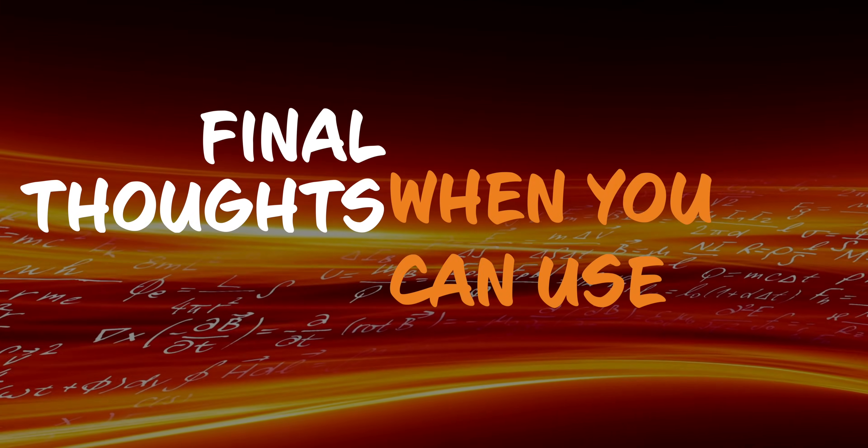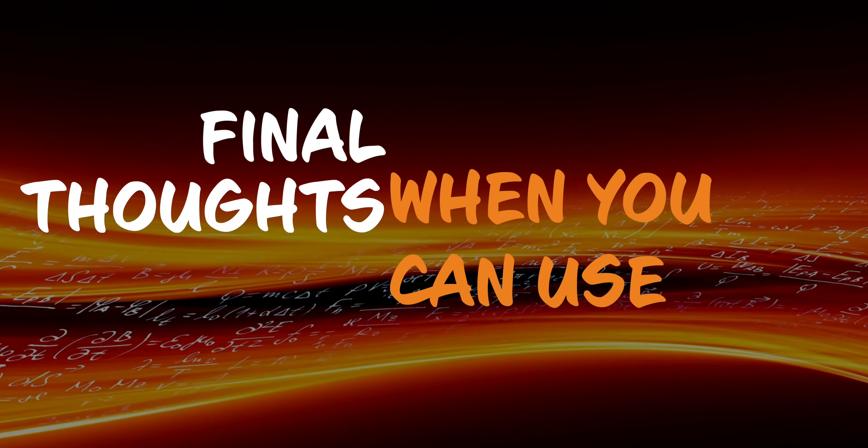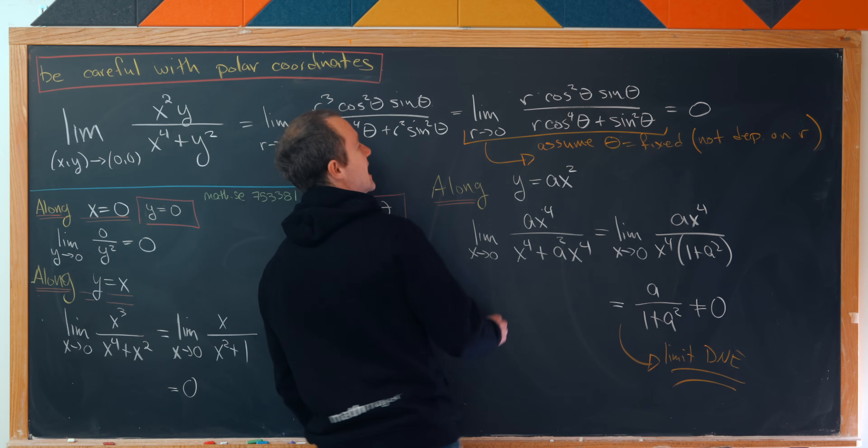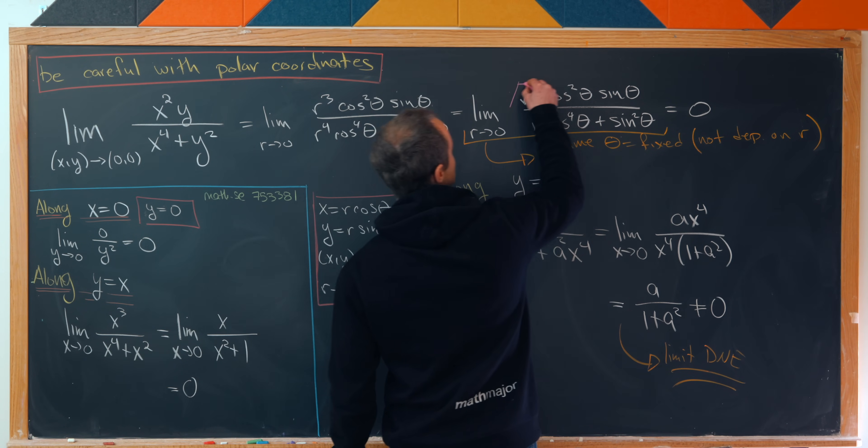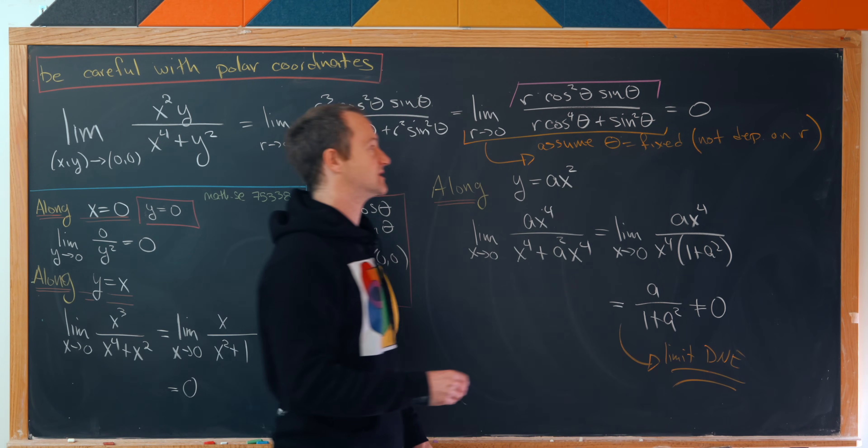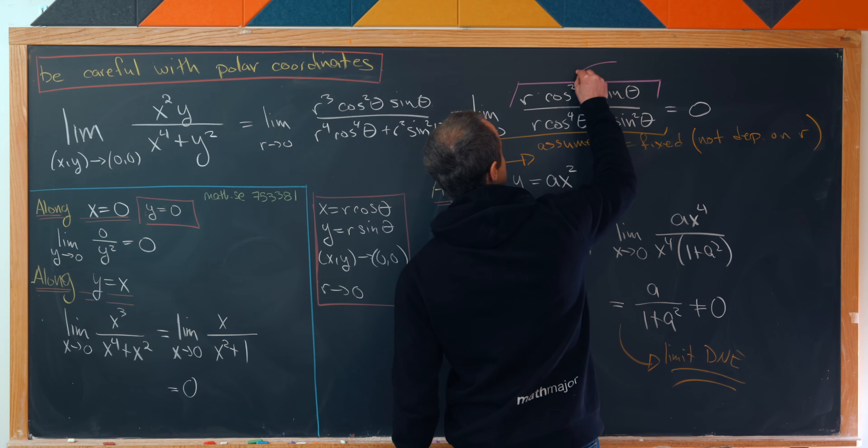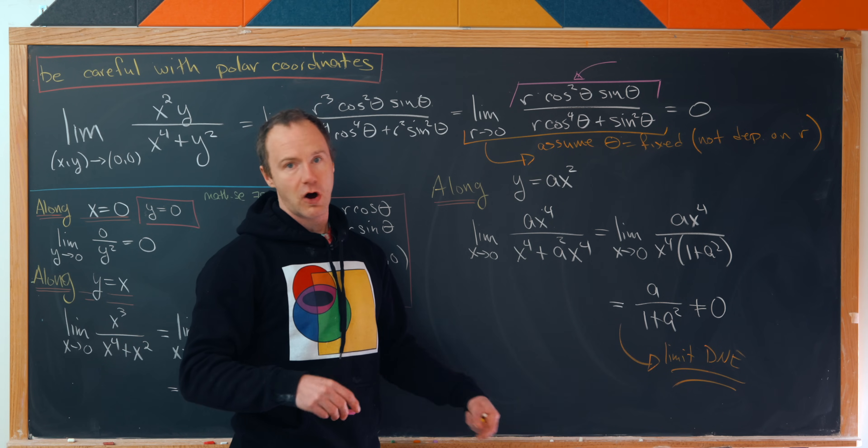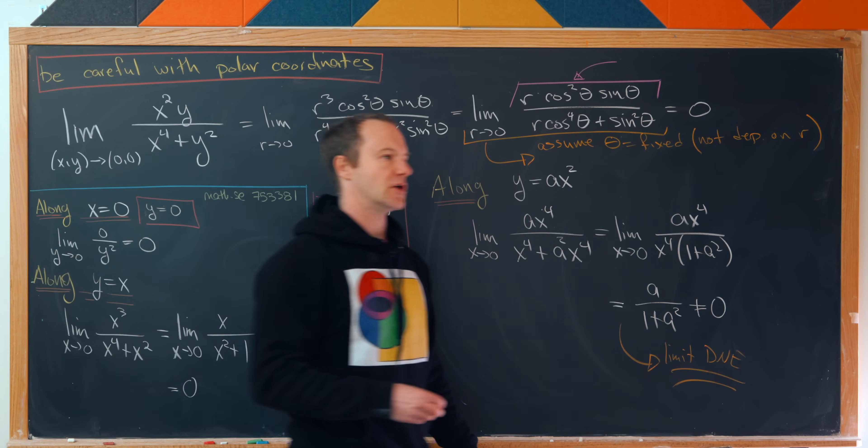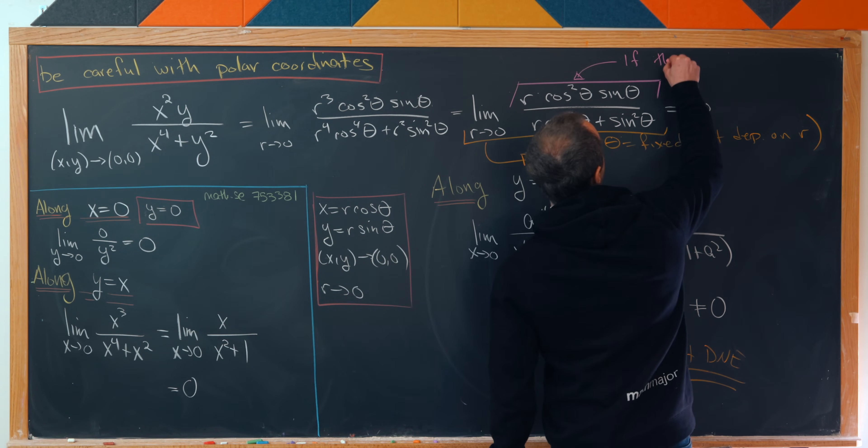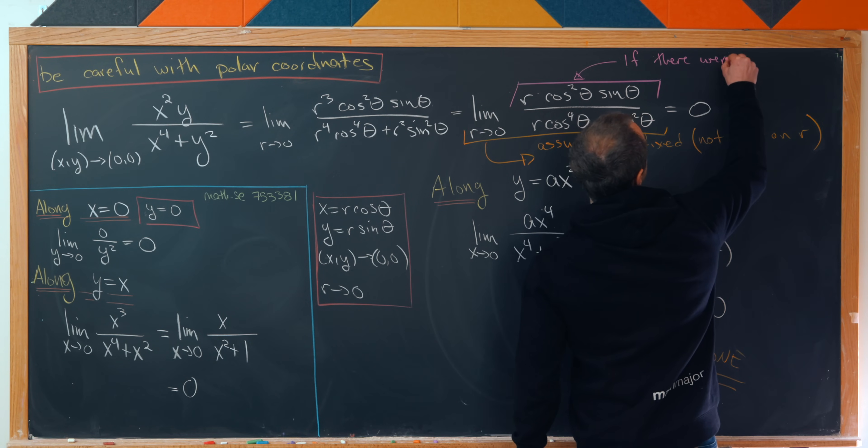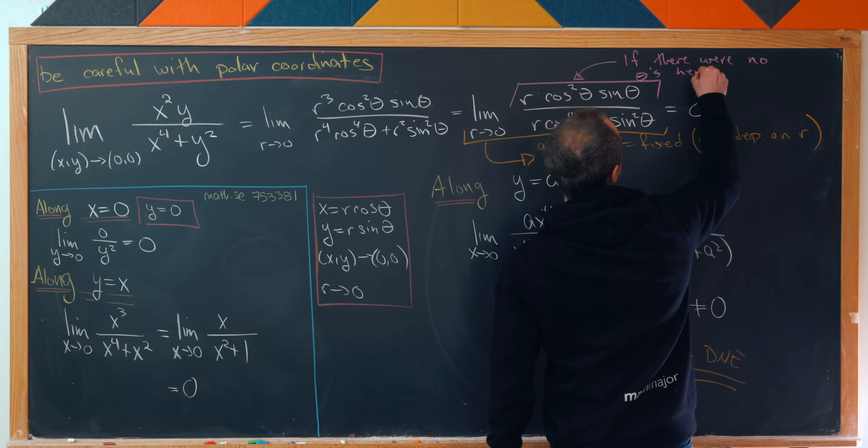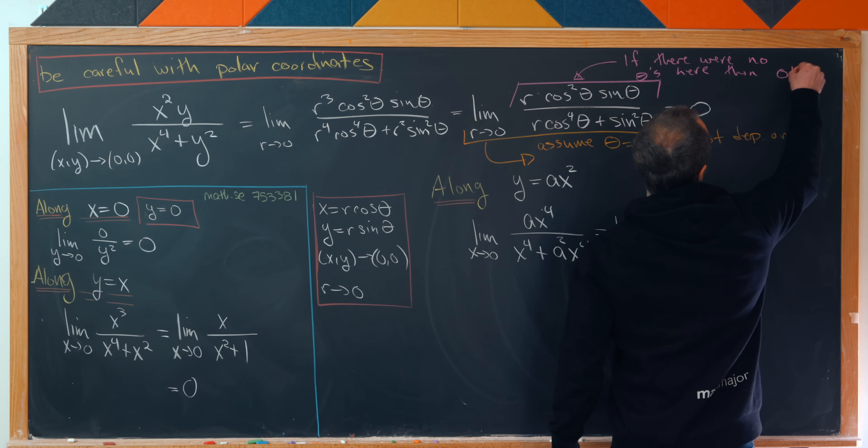So now I guess maybe the most important thing to answer is how do you know when you can use polar coordinates and when you can't use polar coordinates? Well, I would say the best way to be sure that using polar coordinates is okay is after passing to polar coordinates and doing simplification, if all of the thetas disappear, then you're okay. So if there were no thetas here, then we're okay.